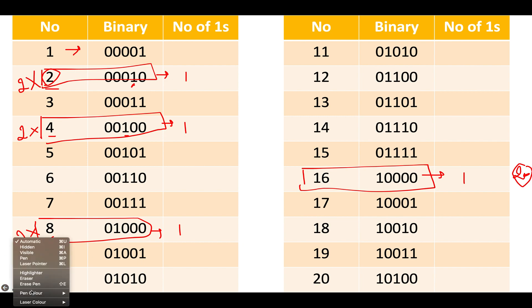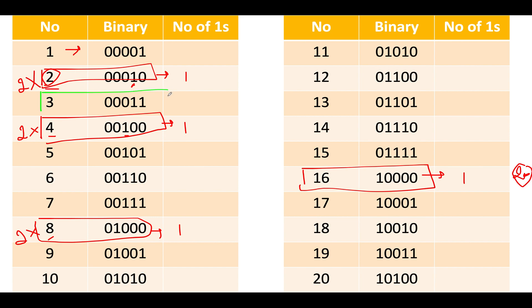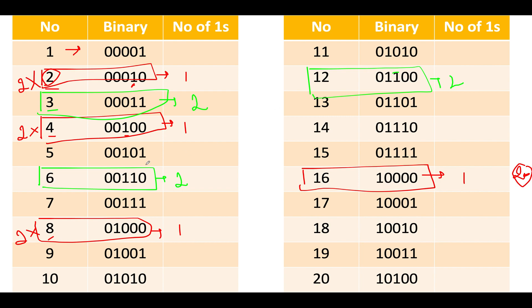Let's take the case of 3. The number 3 has two ones in its binary representation. When we perform the left shift operation on 3, we get 6, and the number of ones in 6 remains the same — 2. Performing left shift on 6 gives us 12, and the number of ones again remains 2. Those two ones are simply sliding to the left.